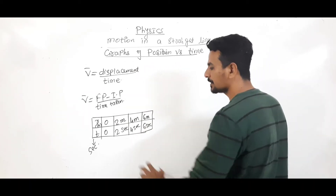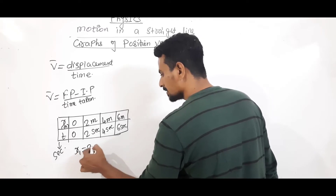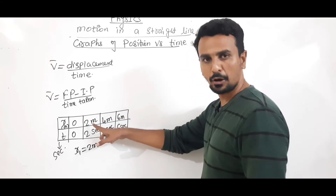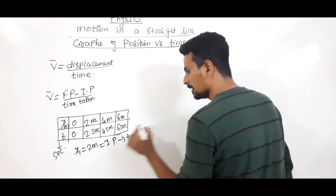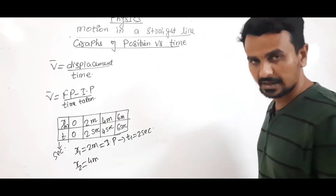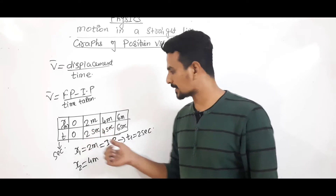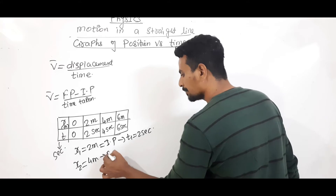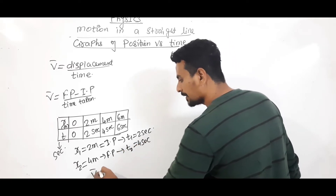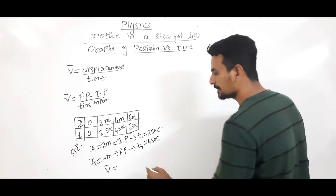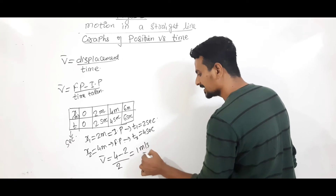Suppose we are calculating average velocity between 2 to 4 seconds. At 2 seconds, the position of the object is the initial position, which is 2 meters. At 4 seconds, the final position is 4 meters. From the definition, average velocity equals displacement by time: final position 4 minus initial position 2, upon time taken 4 minus 2 equals 2. So, 1 meter per second is the average velocity.